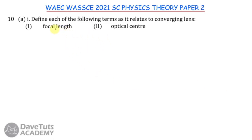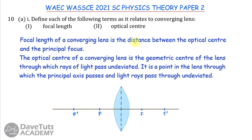In this optics question, we define focal length and optical center for a converging lens. The focal length is the distance between the optical center and the principal focus. The optical center is the geometric center of the lens through which the principal axis passes and through which light rays pass undeviated.